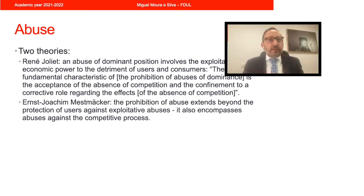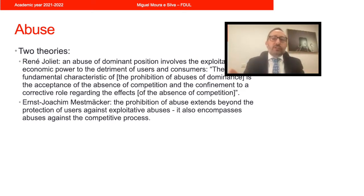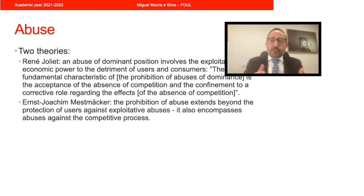The conduct found in Article 102's examples — like excessive prices, unfair pricing and unfair terms of trade, limitation of production in a way that damages consumers, and discrimination between clients or suppliers — are typically cases where the dominant firm exploits its trading partners, be they suppliers, distributors, or ultimately consumers. So for Joliet, the idea behind Article 102 was the as-if competition theory: the dominant firm is allowed to be dominant, but its behavior is regulated so that it does not exercise market power in a way that is detrimental to trading partners and consumers.